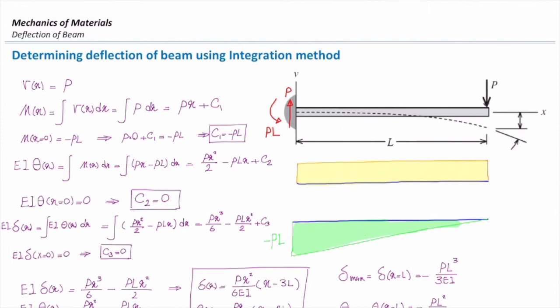A student asked what EI means. E is modulus of elasticity and I is moment of inertia of the beam. The product EI is called the rigidity of the beam. Higher modulus of elasticity gives a more rigid beam, and a larger cross-section gives higher moment of inertia, which gives larger rigidity.